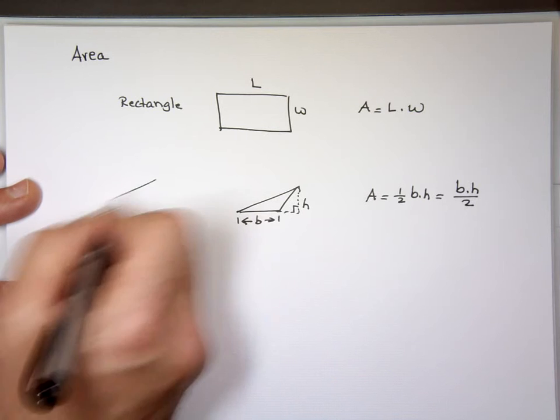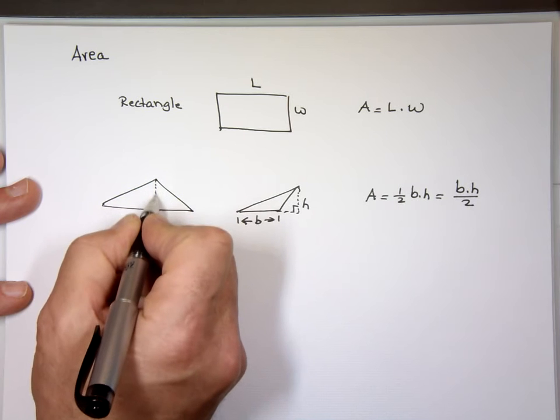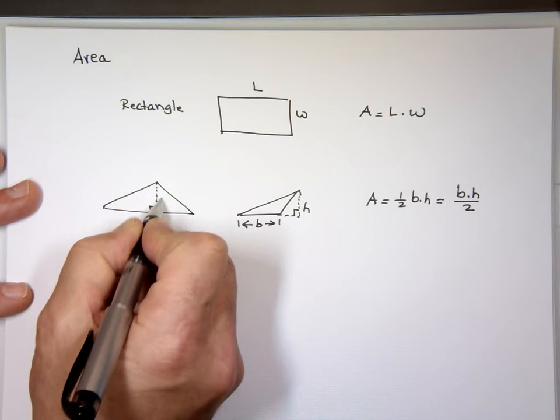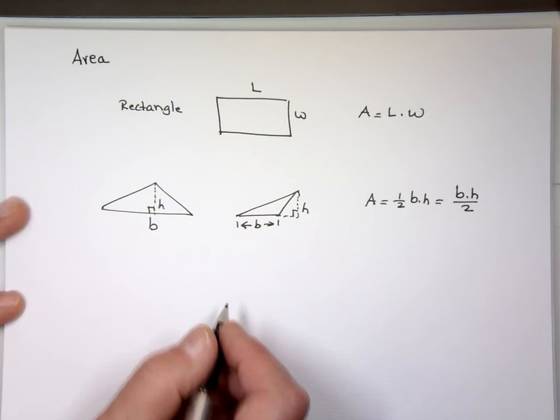Sometimes the triangle looks like this. This is the base. In this case the height will be this. It has to make a 90 degree angle with the base. So still base times height divided by two. This is a triangle here.